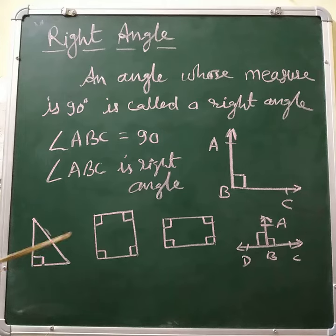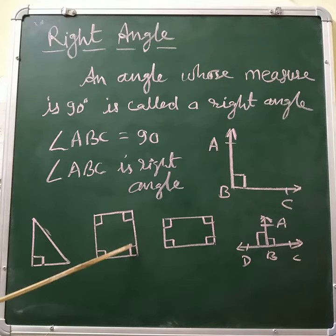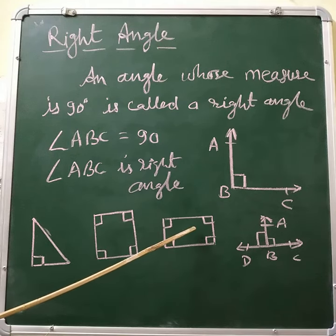In a square, all the angles are of 90 degrees, so these are right angles.